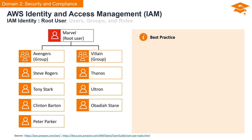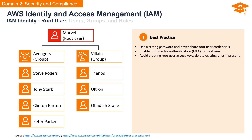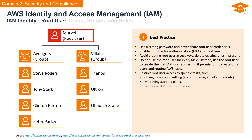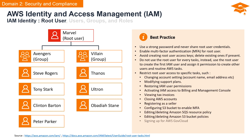The AWS account root user possesses significant power. Best practices for safeguarding the root user include: using a strong and complex password, never sharing root user credentials with anyone, enabling multi-factor authentication or MFA for your root user, avoiding creating an access key for the root user and deleting existing ones, and avoiding the root user for routine tasks. Reserve the root user for initial account setup, creating your first IAM user, and specific tasks only the root user can perform, such as changing account settings, modifying support plans, and restoring IAM user permissions.